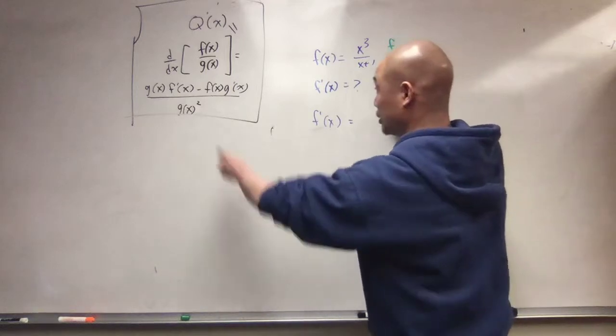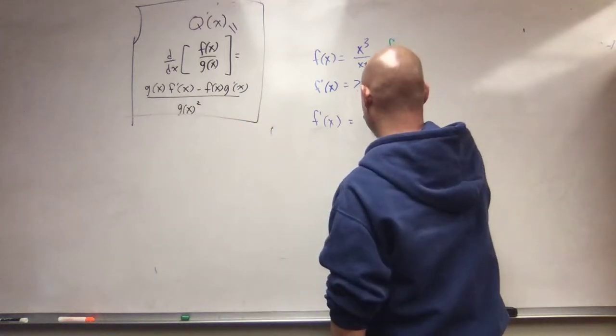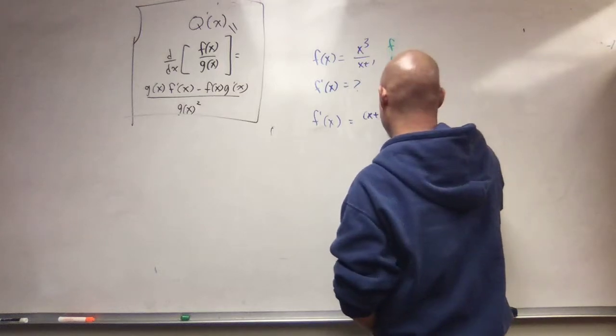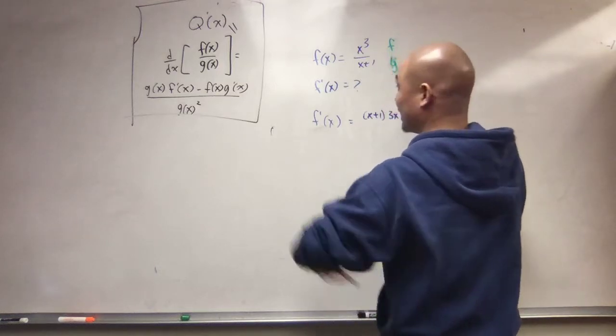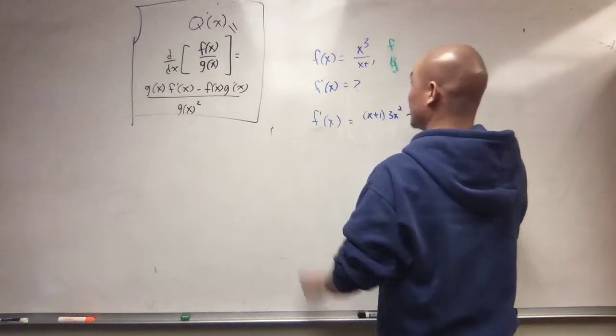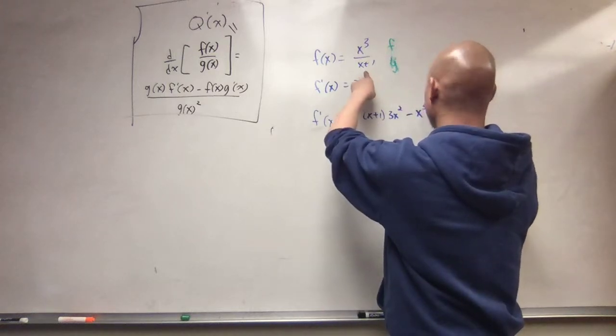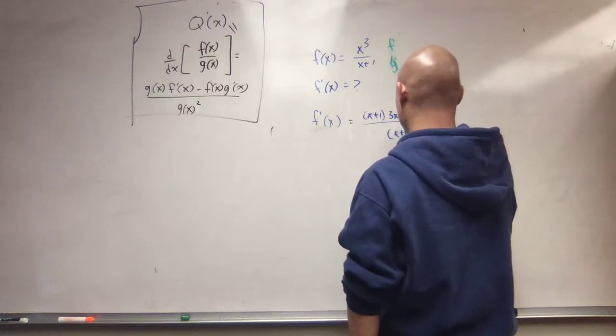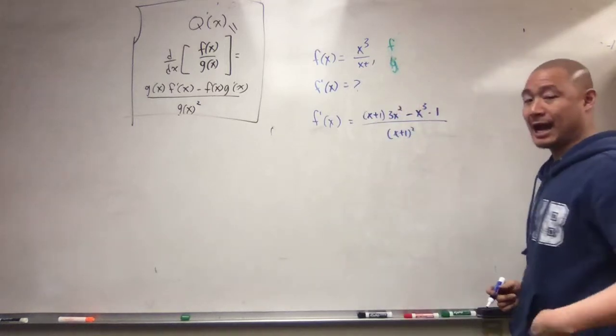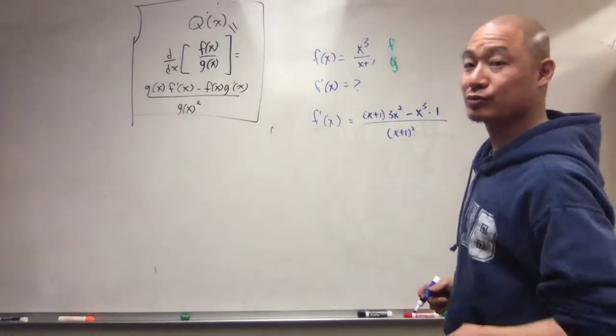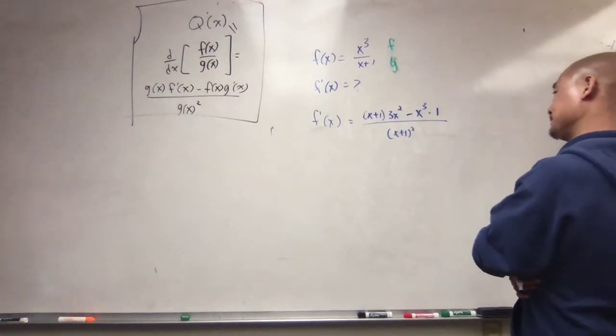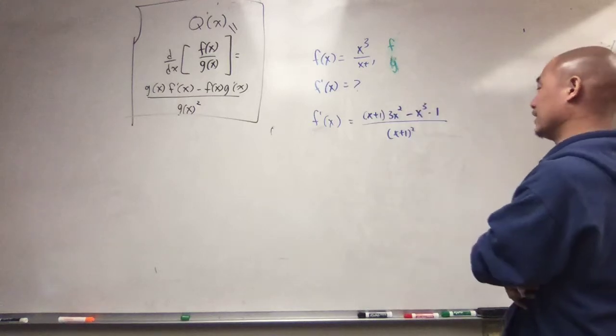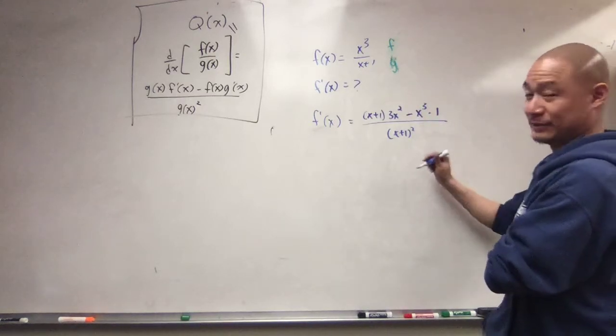I get g, x plus 1, times the derivative of f, 3x squared, minus f, which is x cubed, times the derivative of g, which is just 1, over x plus 1 squared. And yeah, there's probably a nice little bit of algebra that could be done to simplify this, but that's essentially the result of this process.